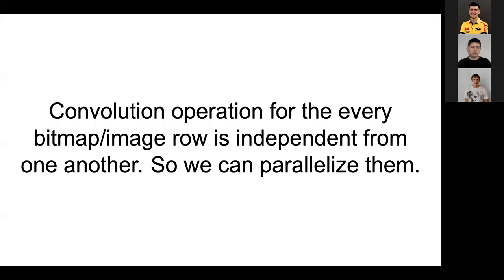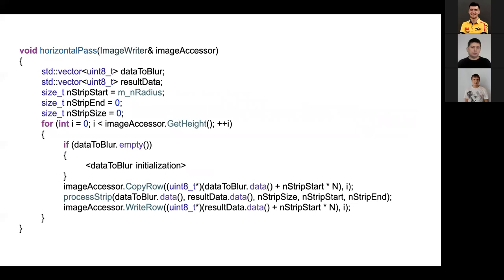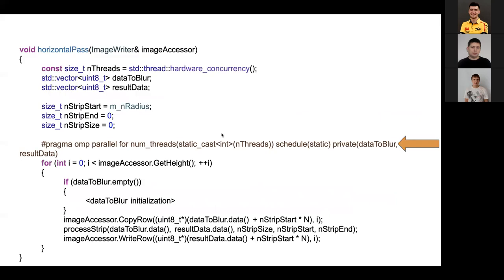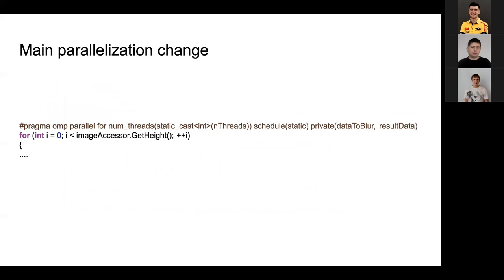If you look at this loop, every iteration is independent from each other, so it would be good to run iterations in separate threads. It is very elegant and easy to add multi-threading with the OpenMP library. All we need to add is this one line pointed by the arrow — an OpenMP pragma instruction: `#pragma omp parallel for`.